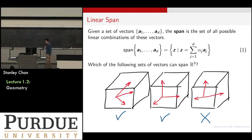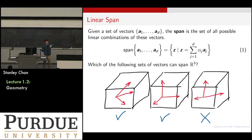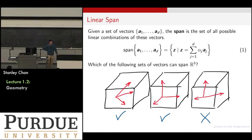Why are we interested in looking at these? Think about going back to the regression problem where you have all these columns — they are the GRE scores, the GPA scores, and so on. You want to find a regression coefficient: put so much emphasis on GRE, typically not too much in graduate admissions, but more emphasis on GPA because it really matters. That's why we want to study the span of all these vectors.